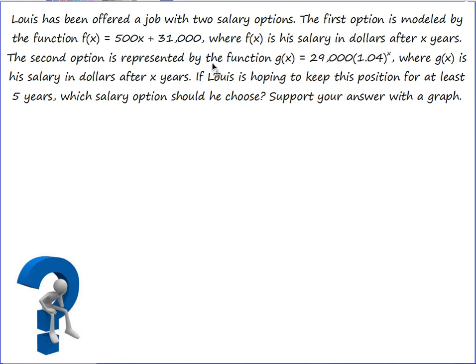The second option is represented by the function g(x), which is 29,000(1.04)^x. You can see since this is in exponential form that his salary would start at $29,000 and increase by 4% each year. If Lewis is hoping to keep this position for at least five years, which salary option should he choose? And of course, we need to support our answer with a graph.